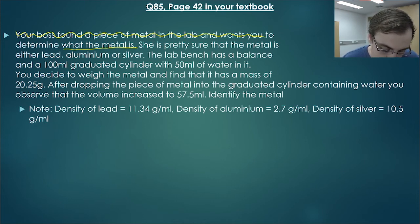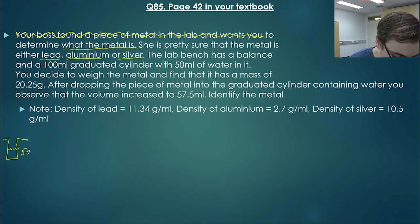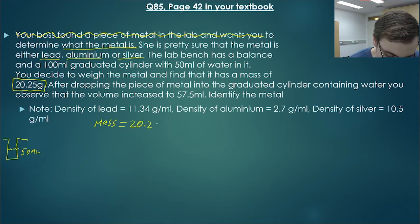She is pretty sure that the metal is either lead, aluminium or silver. So we have a choice of three here. The lab bench has a balance and 100 milliliter graduated cylinder with 50 milliliters of water in it. So we have a cylinder here with 50 milliliters of water. You decide to weigh the metal and find that it has a mass of 20.25 grams. That is important. That's very important. So the mass is 20.25 grams. After dropping the piece of metal into the graduated cylinder containing water, you observe that the volume increased to 57.5 mil. That's interesting. So what do we do? After dropping our little piece of metal, we notice that the volume increased to 57.5 mils. Identify the metal.